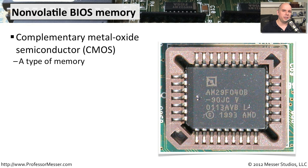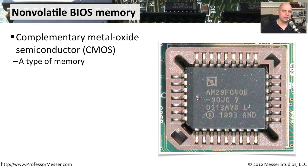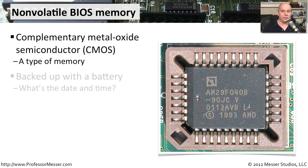But there are a lot of configuration settings that also have to be stored somewhere, and they're stored in a section of your computer called the CMOS — Complementary Metal Oxide Semiconductor. It's a type of memory. Although your computer may not necessarily be using this exact type of memory to store this information, we do generally still call it the CMOS. It's just a term we use these days, regardless of where this data happens to be stored.